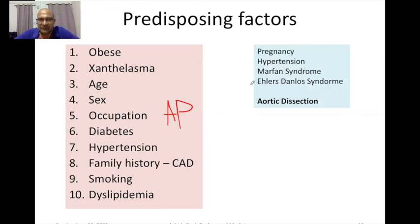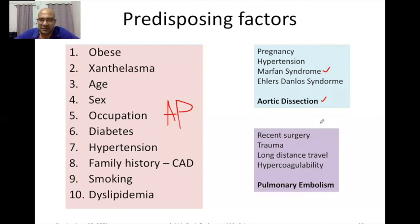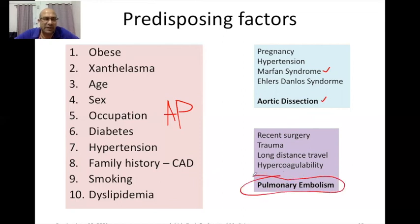Another set of predisposing factors could be pregnancy, hypertension, Marfan syndrome, and Ehlers-Danlos syndrome. A tall, lean, lanky young male who presents with chest pain should make you think of Marfan syndrome and suspect aortic dissection if the pain is sudden, sharp, and stabbing with other telltale signs. A history of recent surgery, trauma, long-distance travel, or a hypercoagulable state should alert you toward pulmonary embolism.